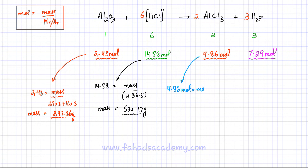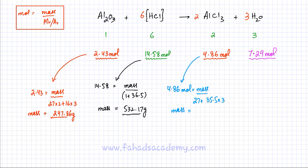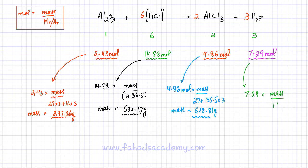For AlCl₃: solving for mass gives 648.81 grams. Lastly, H₂O has 7.29 moles. The MR of H₂O is 16 + 1 + 1 = 18. Mass of H₂O = 7.29 × 18 = 131.22 grams.